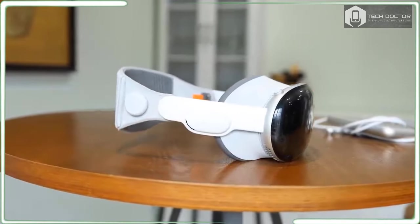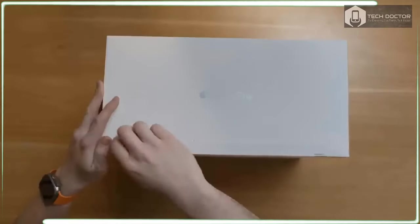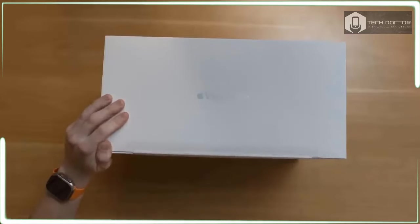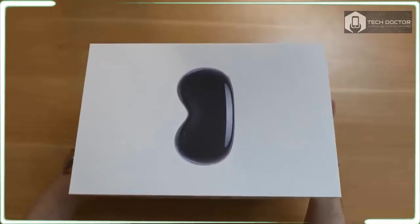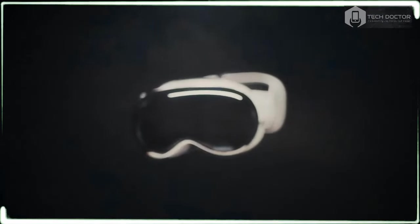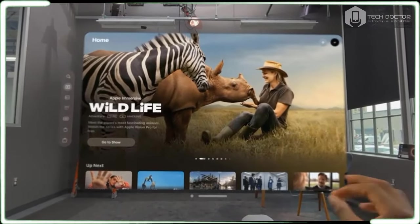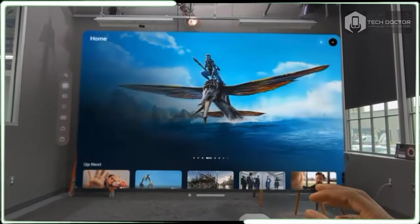The right side of the Vision Pro houses the digital crown, which brings up the home screen from wherever you are. Turning the crown dials up the immersion on whatever environment you're watching and also controls the volume. The button on the left side of the headset is a top button, which you can use for capturing spatial photos and videos as well as confirming purchases.